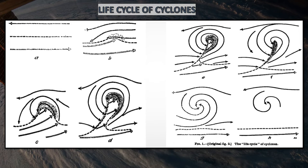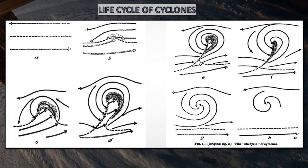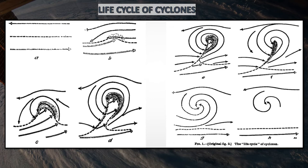The large zones of continuous rain disappear, and precipitation occurs only as intermittent showers. These conditions persist until the cyclone is wasted away. A cyclone gathers its power from warm water, but once it has landed on the ground, it slowly dissipates — like losing its energy source.